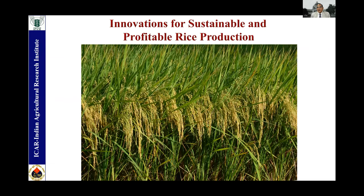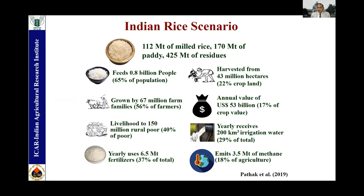In rice: rice has got its lifeline — rice is life and more so in all Asian countries. In India, rice is annually produced at 114 million tons of milled rice, 170 million tons of paddy, and 425 million tons of residue. It feeds 0.8 billion people — 65% of the population — grown on 67 million farm families, and is a livelihood security to 150 million rural people. Yearly it uses 6.5 million tons of fertilizer, harvested from 44 million hectares — 22% of the crop area — with an annual value of 53 billion US dollars. It receives 200 cubic kilometers of water, which is 29% of total water use, and emits 3.5 million tons of methane, 18% of total agriculture emission.